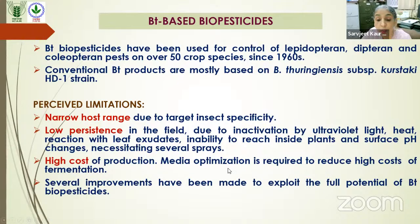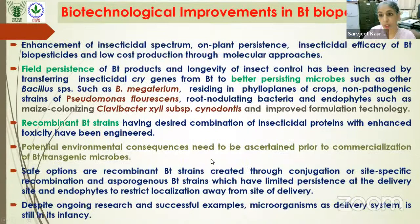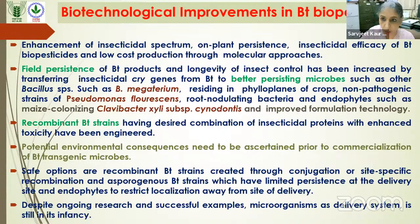Several media optimization studies have been done to reduce the cost of Bt biopesticide production. This is a list of Bt biopesticides based on naturally occurring strains — major ones include kurstaki-based products against Lepidoptera, and israelensis-based products for mosquito control. Biotechnological improvements have been carried out to enhance insecticidal spectrum, improve on-plant persistence, and increase the range of efficacy.